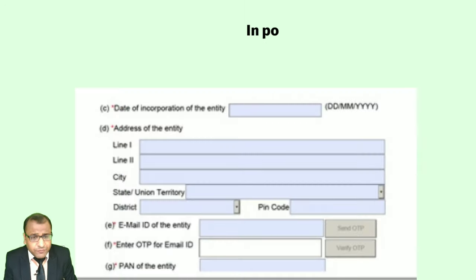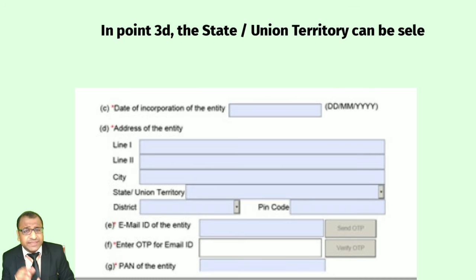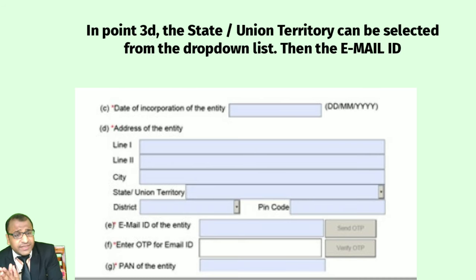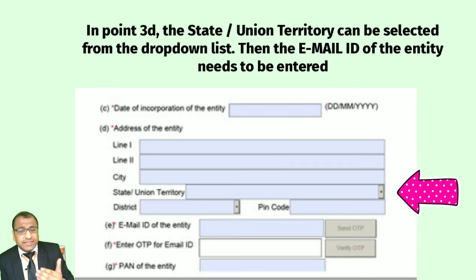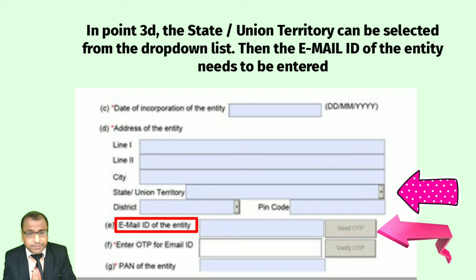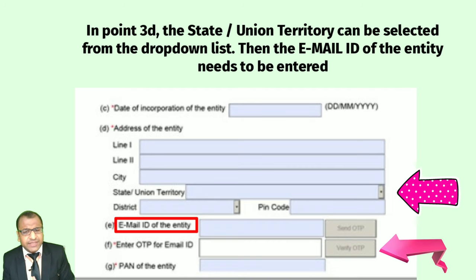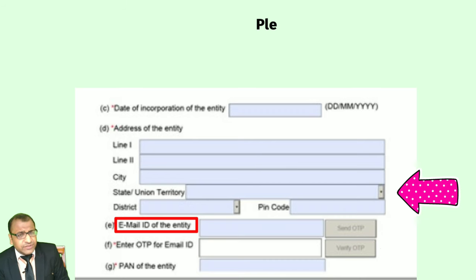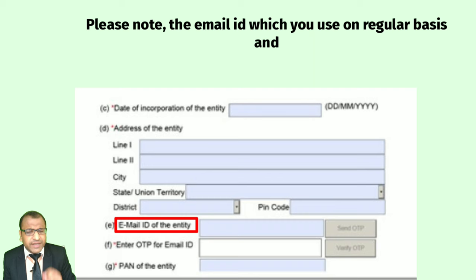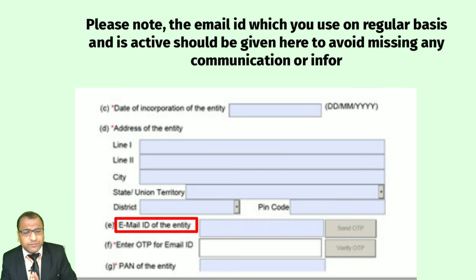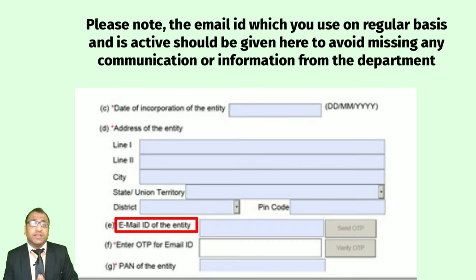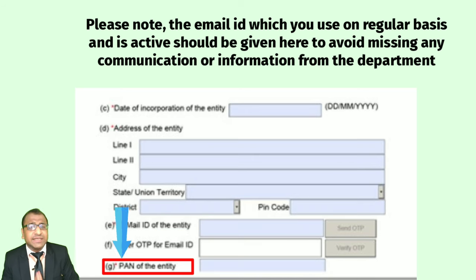Step 6: After the required information is filled in Point 3D, the state or union territory can be selected from a drop-down list. Then the email ID of the entity needs to be entered, after which click on 'Send OTP' for verification. After entering the OTP, click on 'Verify OTP' and the email ID shall be validated. Please note: use the email ID which you use regularly and is active, to avoid missing any communication from the department. Finally, in Point 3, the PAN of the entity needs to be entered.